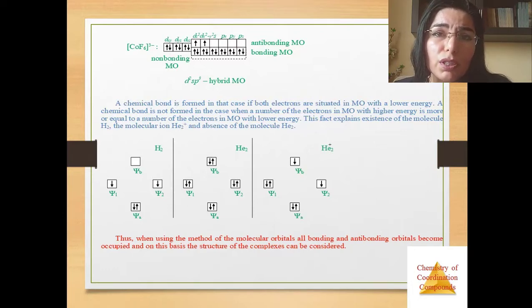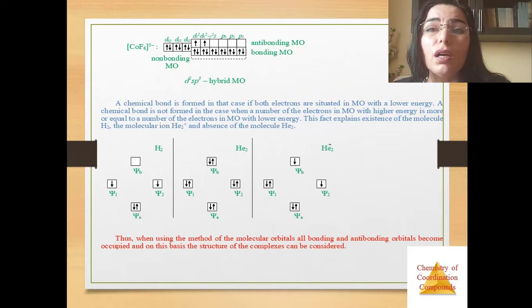Thus when using the methods of molecular orbitals, all bonding and antibonding orbitals become occupied and on this basis the structure of the complexes can be considered.